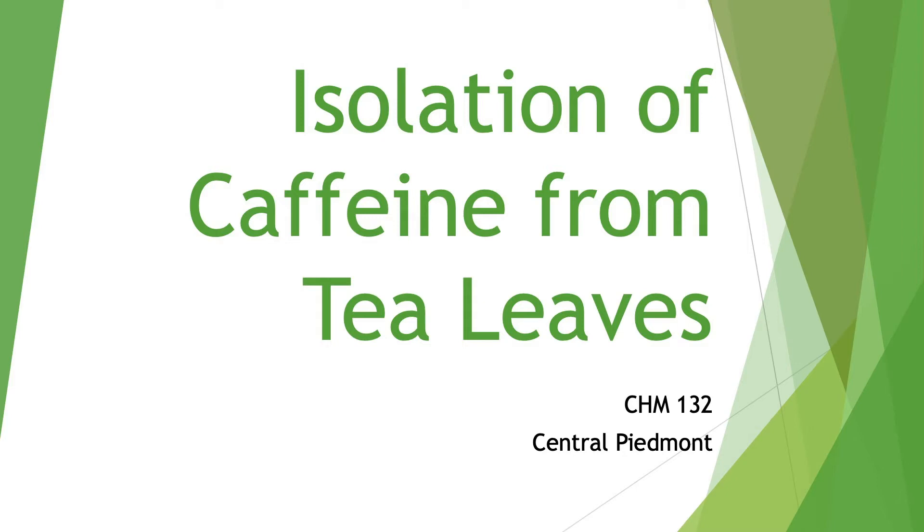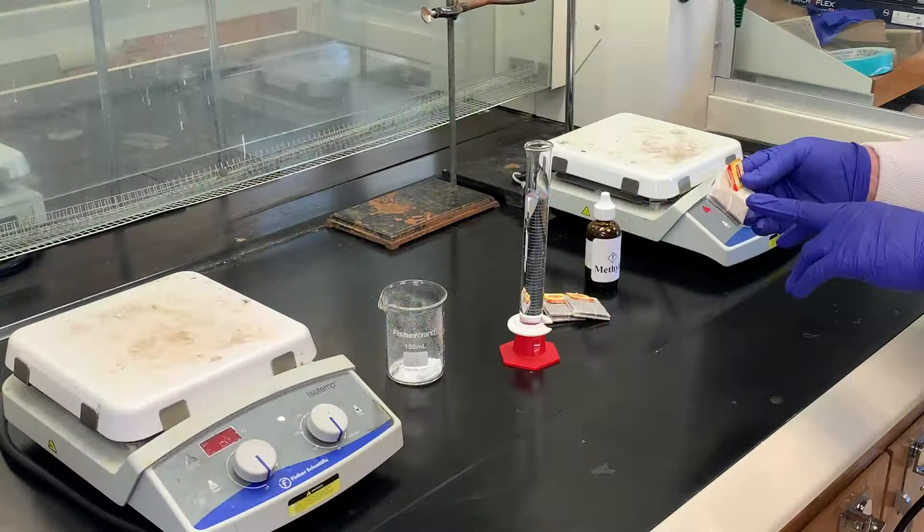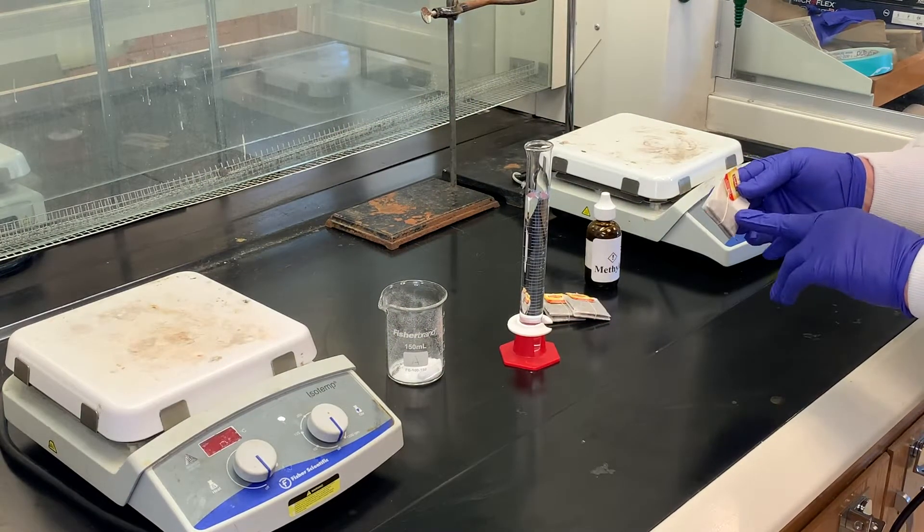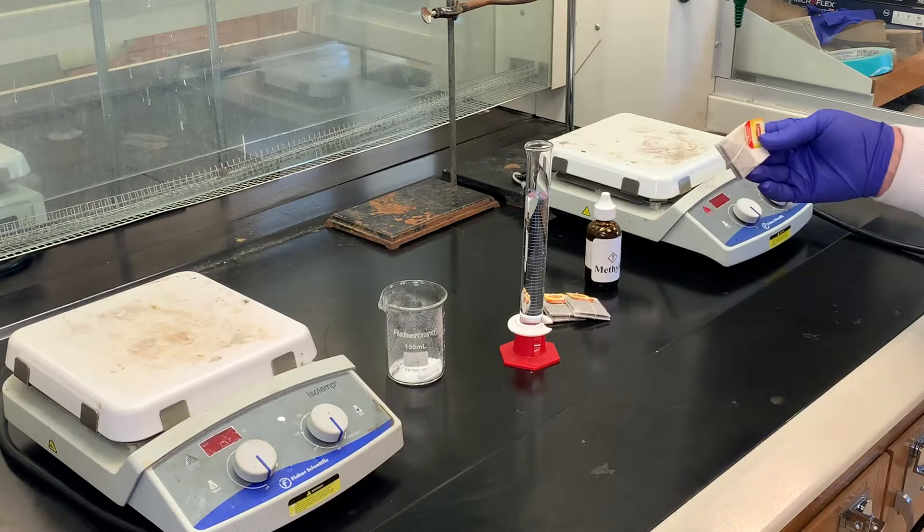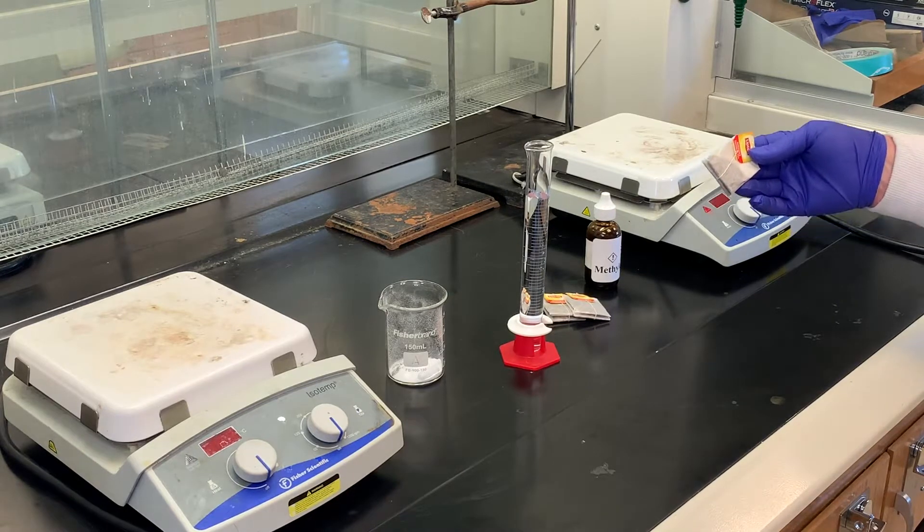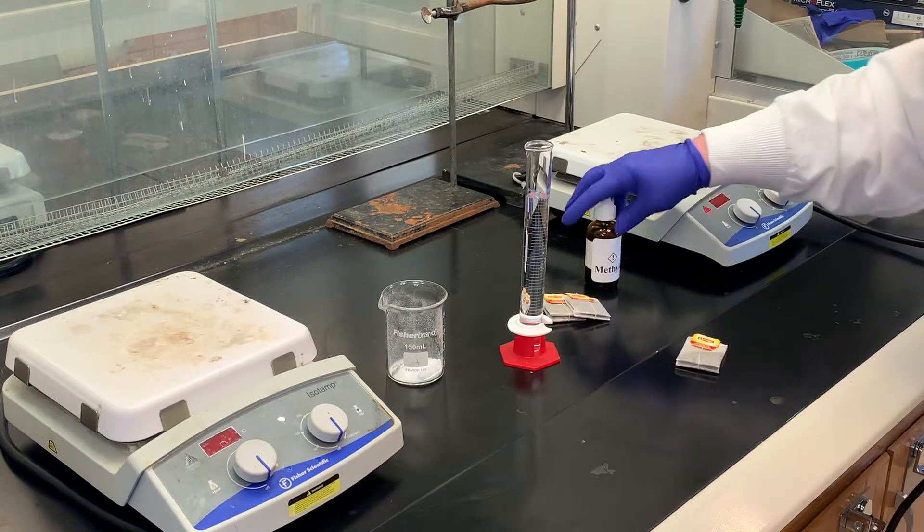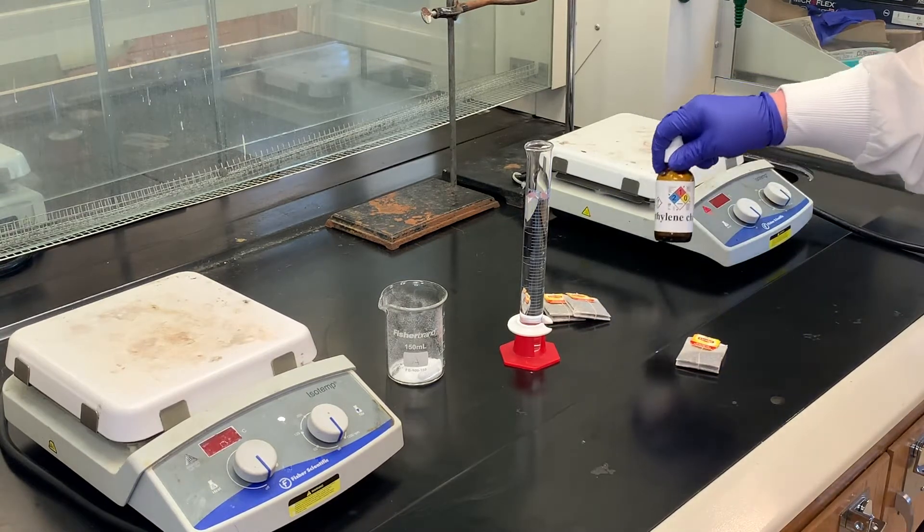Today's lab, we're going to extract or remove caffeine from tea. When we talk about the word extract, or extraction process in general, it's really a way that we can remove one component from a mixture—in this case, caffeine—and put it in another component. The other component that we're going to use is this solvent called methylene chloride.